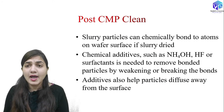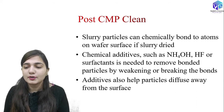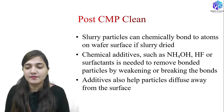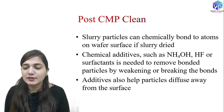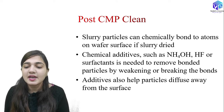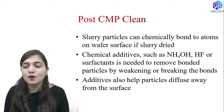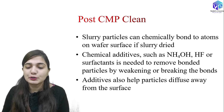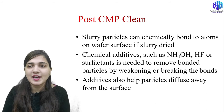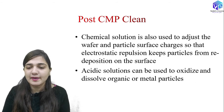Slurry particles can chemically make a bond to the atoms on the wafer surface, and if slurry is dried it is going to stick on the wafer surface. We can use chemical additives like NH4OH, HF, or surfactants to remove the bonded particles by weakening or breaking the bond. After weakening the bond, we use the additives to help the particle diffuse away from the surface, and this is how we remove all of the contaminant particles.